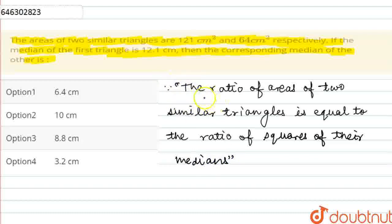Here is the theory that the ratio of areas of two similar triangles is equal to the ratio of squares of their medians.